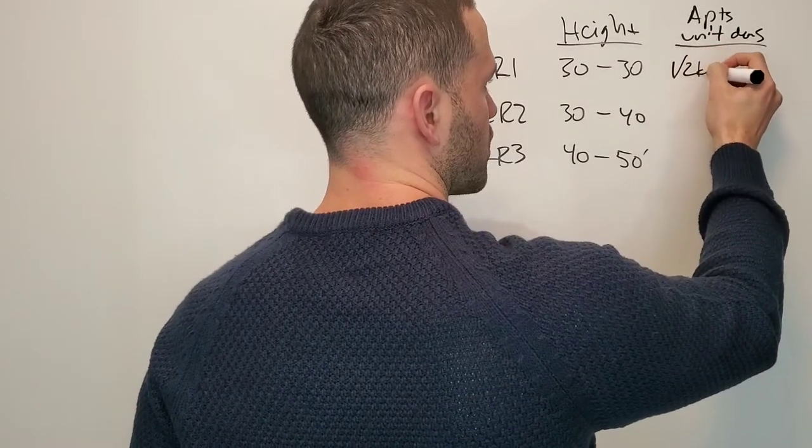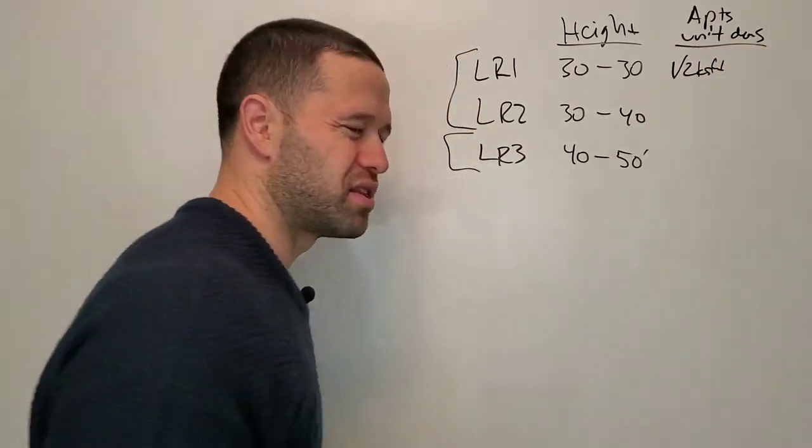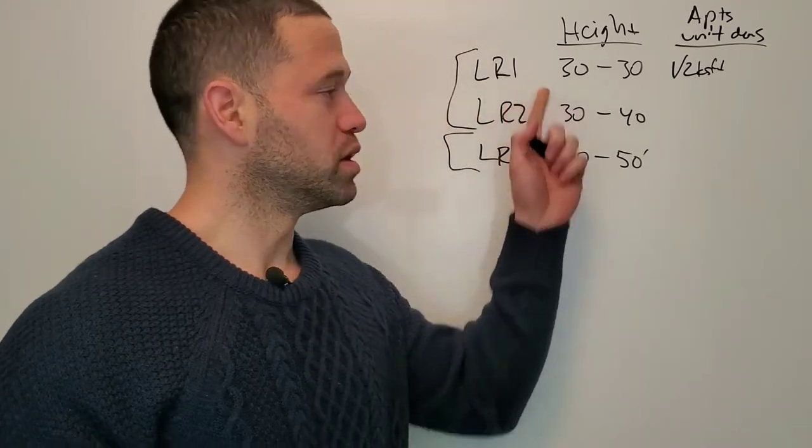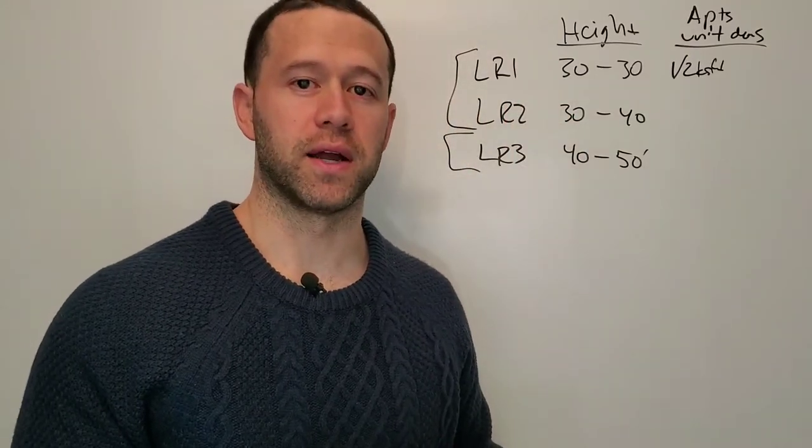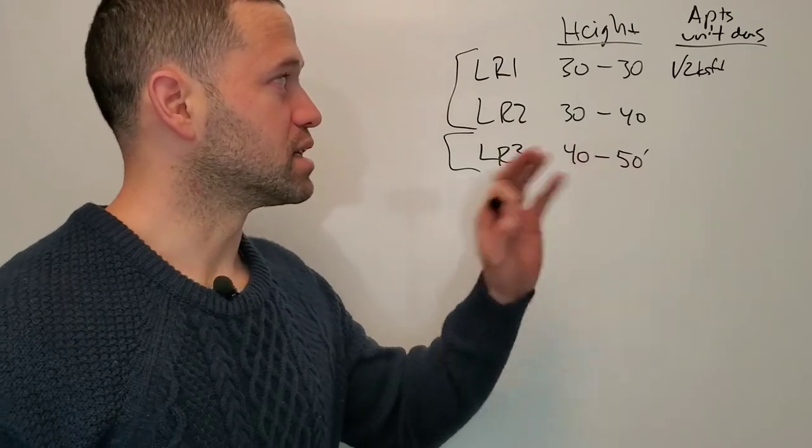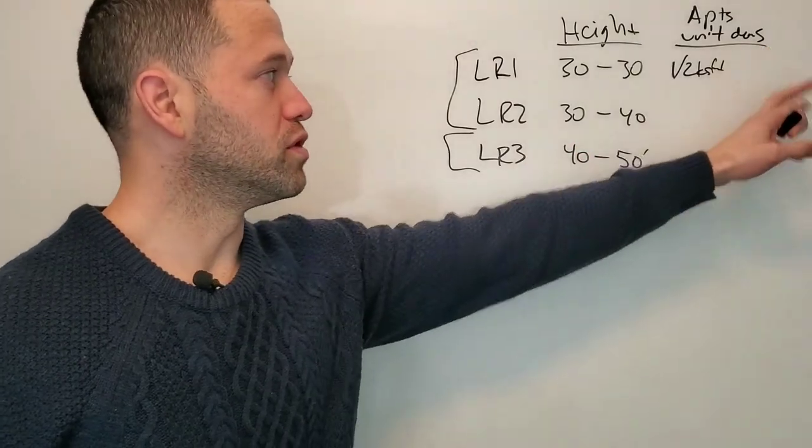If you had a 6,000 square foot lot zoned LR1, you could only build a triplex. Now that same 6,000 square foot lot, they've removed this unit density, so it's gone to unlimited density.